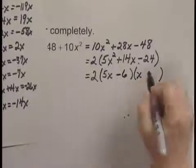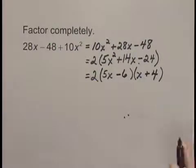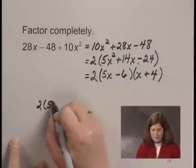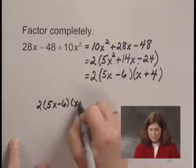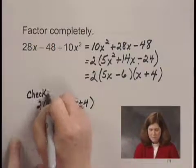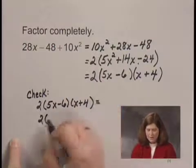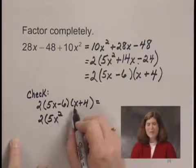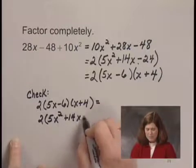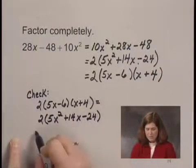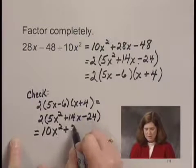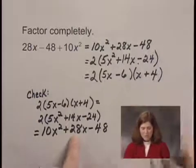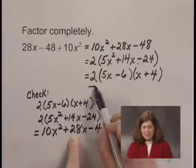And then I'm going to check it, because I did a lot of work there switching signs. To check this, I multiply the binomials, and I get 2 times (5x² + 20x - 6x + 14x - 24), which gives me 2 times (5x² + 14x - 24). Multiplying that, I get 10x² + 28x - 48, which is what we started with, just rearranged. Now, this is the factorization of the original polynomial.